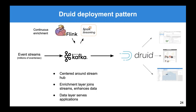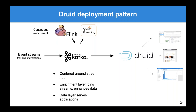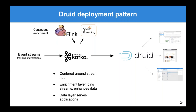This is the typical deployment pattern for Druid and Kafka together. You have an event stream coming in — up to millions of events per second — into Kafka. You have some kind of enrichment happening, typically, using tools like Flink or Spark Streaming — joining streams, enhancing data, adding fields. Then you're loading that enriched data into Druid, and using Druid to power your applications: notebooks, scalable applications, Imply Pivot, and off-the-shelf BI apps.